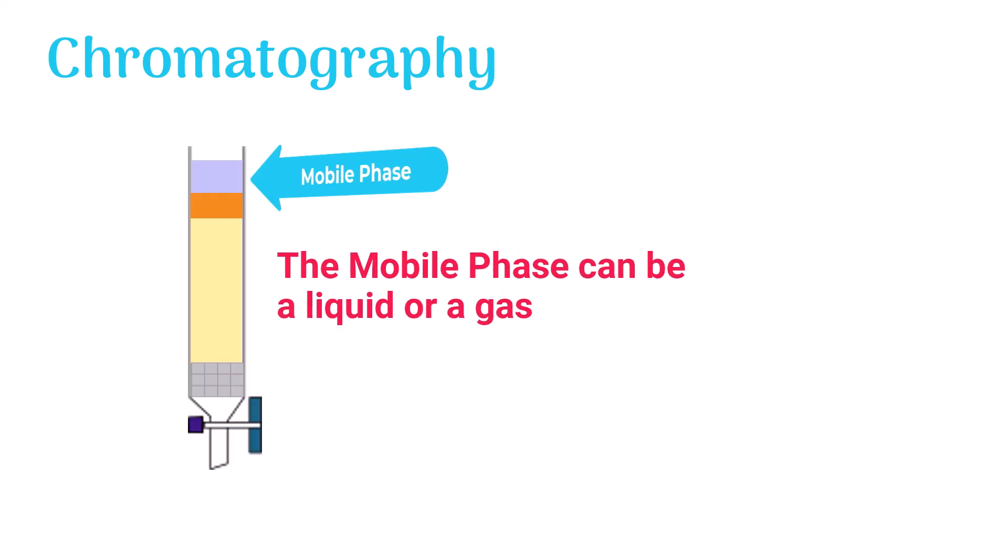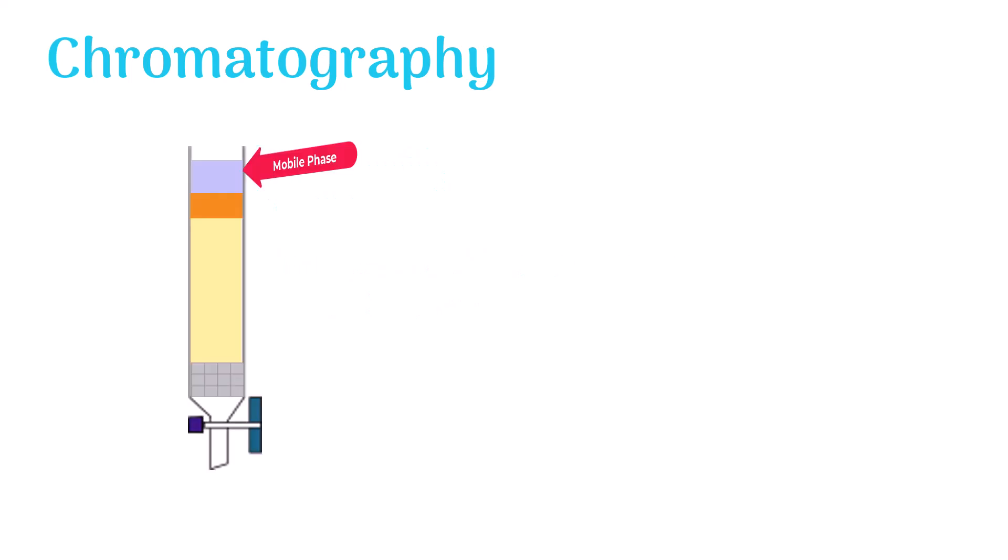Let's see how chromatography works. First, the mobile phase along with the sample in it passes through the stationary phase.